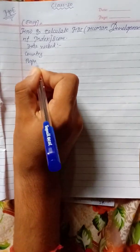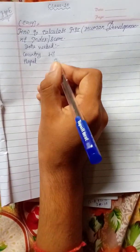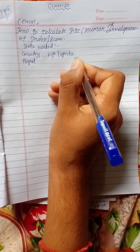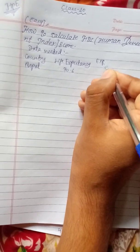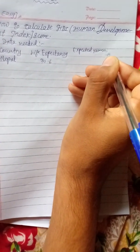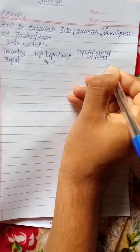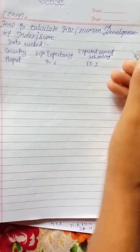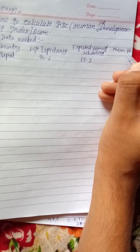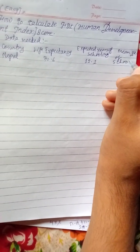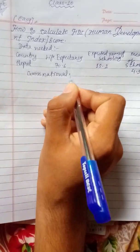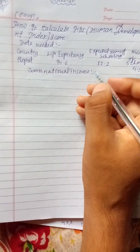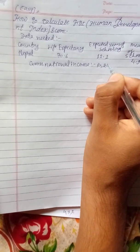The country is Nepal. Life expectancy is 70.6. The expected years of schooling and mean years of schooling — mean year of schooling is 4.9. Gross national income — I will take the example: GNI is 2471.